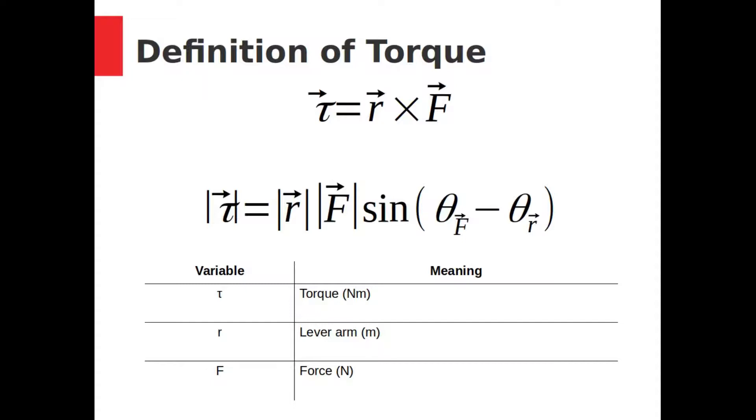Torque equals lever arm cross force. Using the definition of cross product, we can say that the torque is calculated as the size of the lever arm multiplied by the size of the force multiplied by the sine of the angle between them.